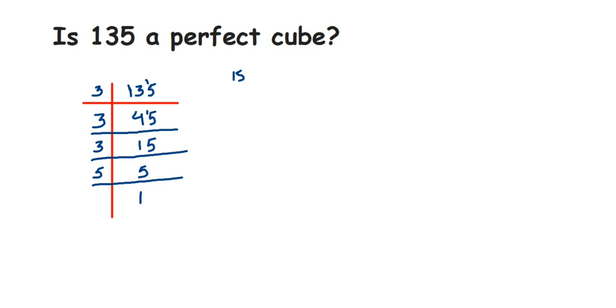Now I got 135 and I got the prime factors here. So 135 can be written as all the prime factors which you got, that is 3 into 3 into 3 into 5.